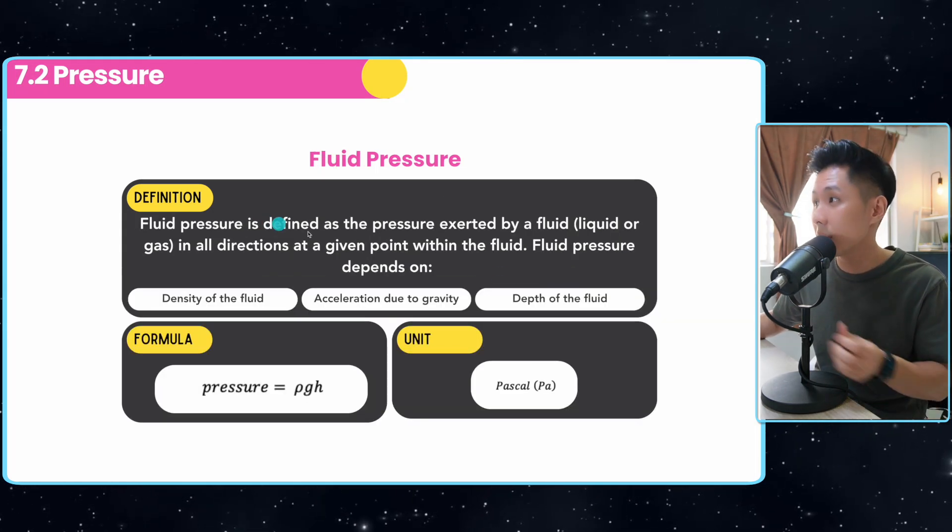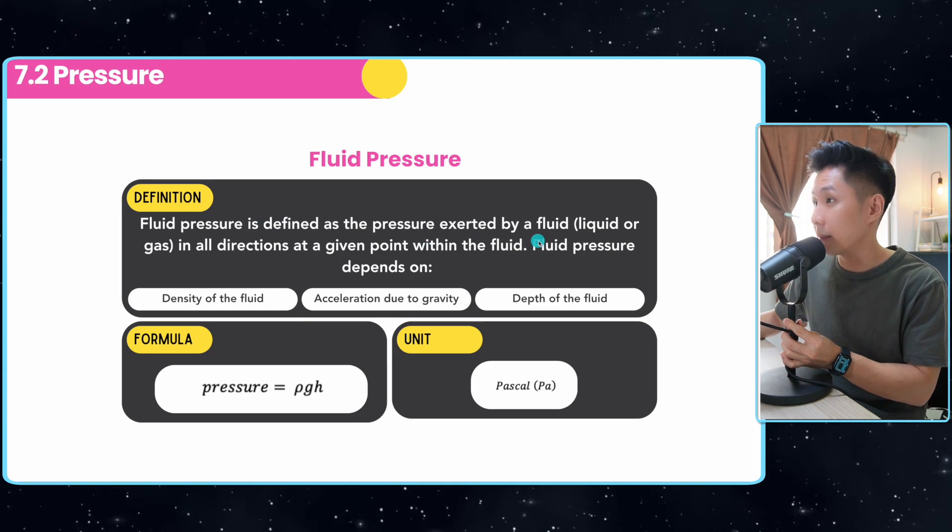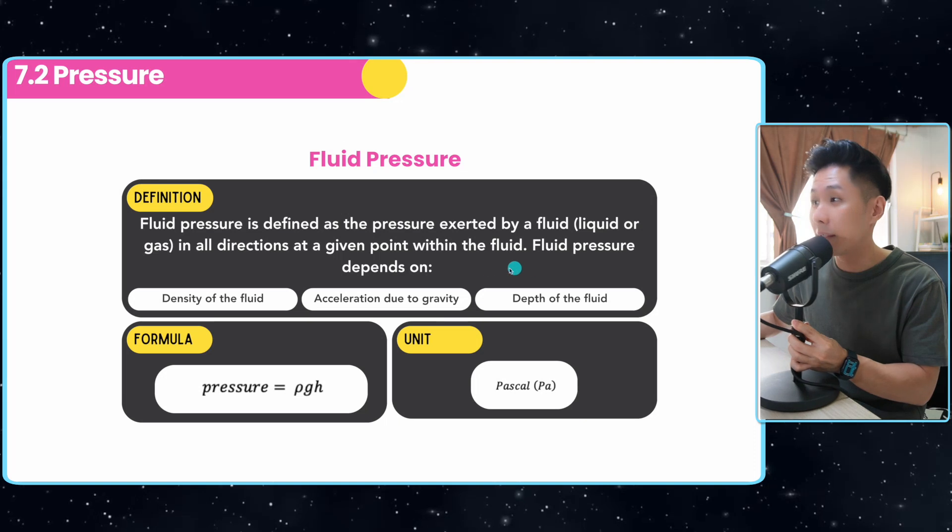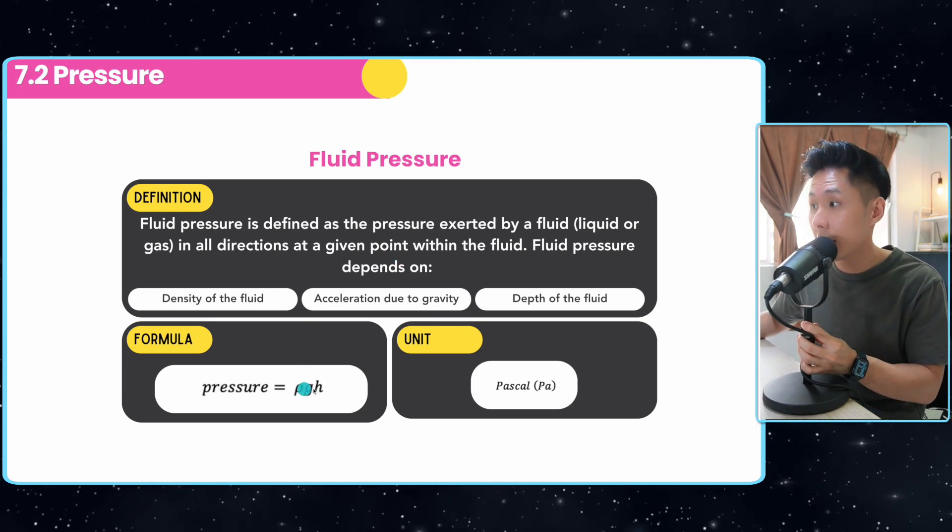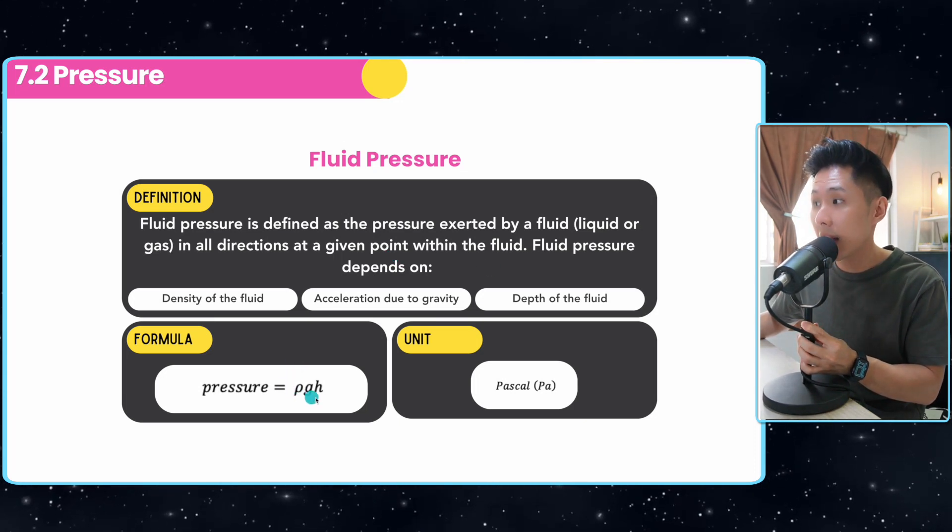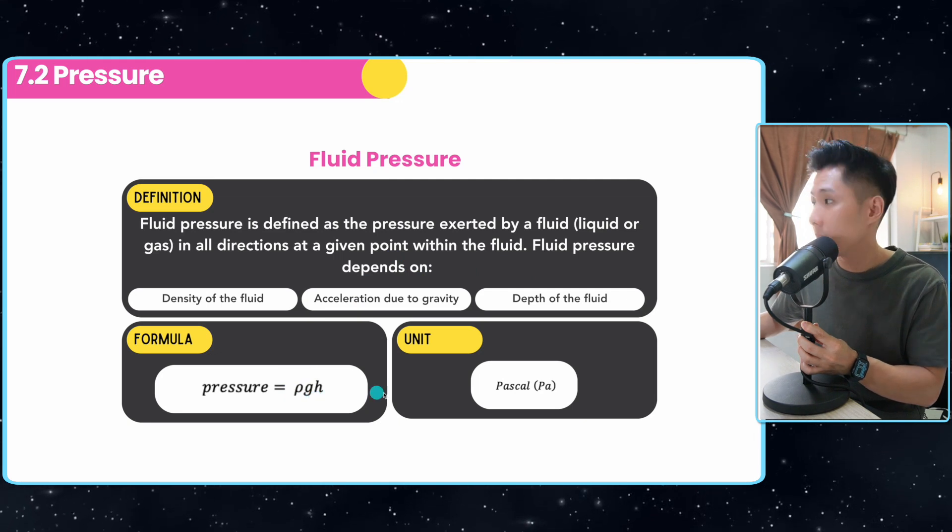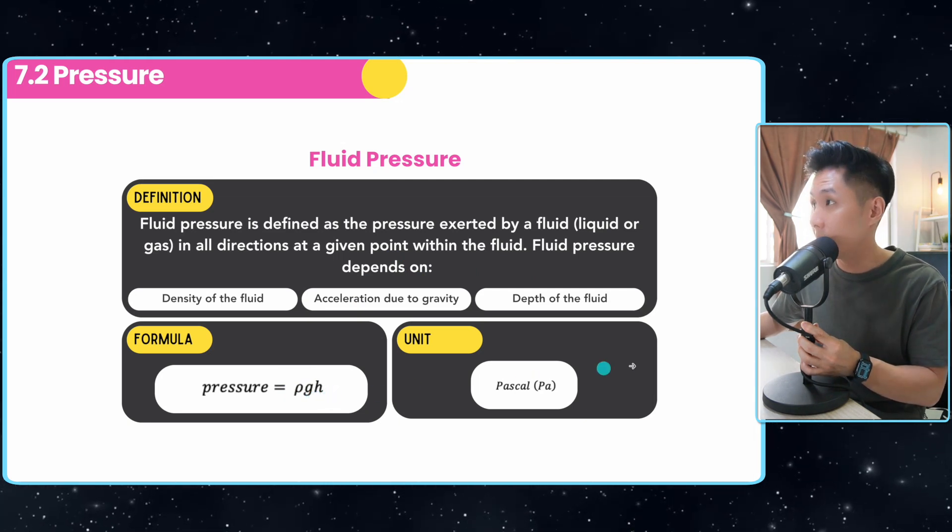We also have fluid pressure. It's defined as the pressure exerted by a fluid in all directions at a given point. Fluid pressure depends on two things: the density of the liquid ρ, acceleration due to gravity, and depth of the fluid. The unit is also pascal.